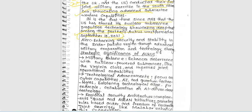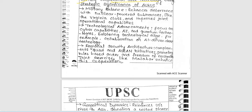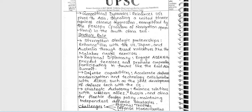The aim — enhancing security and stability in the Indo-Pacific region through advanced military cooperation — is good. Strategic significance is covered: military balance with nuclear-powered submarines like the Virginia class and improved joint operational capabilities; technological advancement — AI and quantum technologies transfer; regional security architecture with Asian initiatives promoting a rules-based order, Malabar exercises enhancing cooperation; and geopolitical dynamics reinforcing the US pivot to Asia, signaling a stance against Chinese aggression with freedom of navigation operations in the South China Sea.